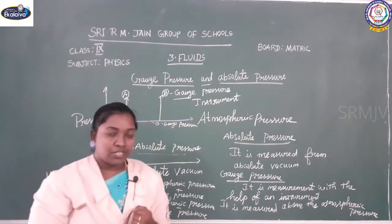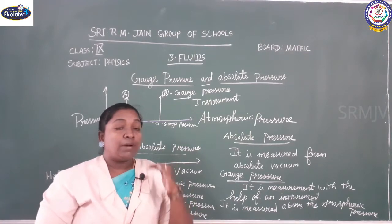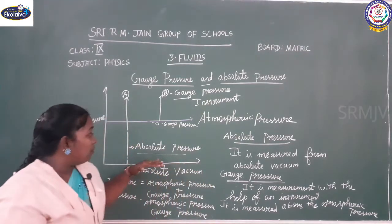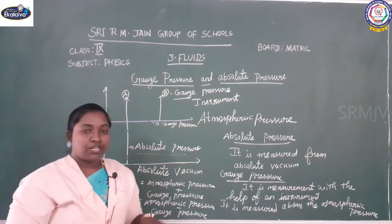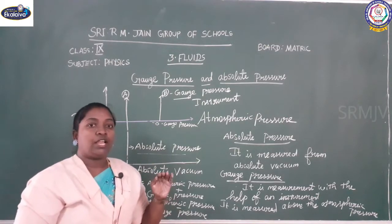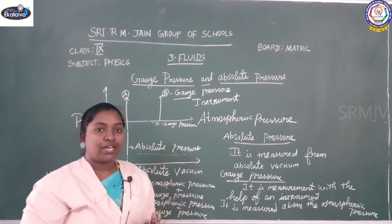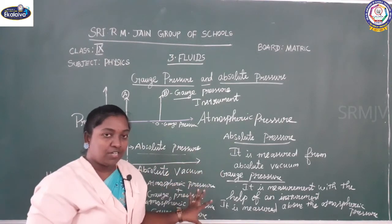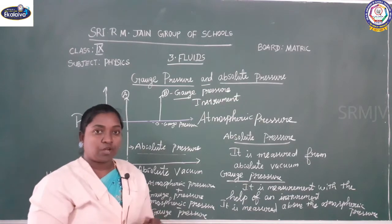So again, absolute pressure can be measured with the help of absolute vacuum, and gauge pressure can be measured with the help of an instrument. We will see the next topic now.